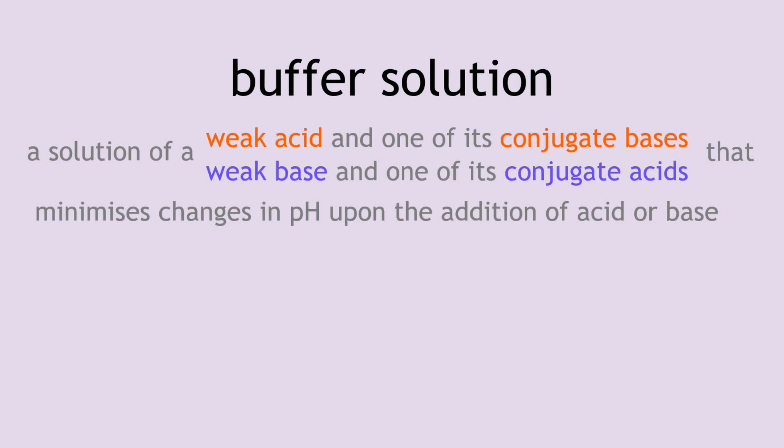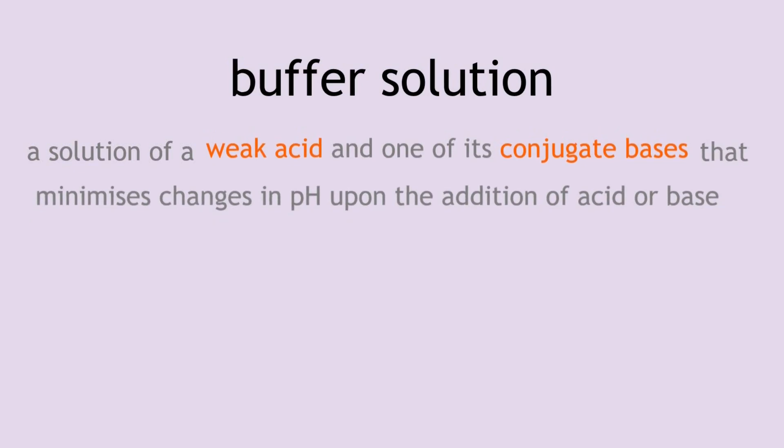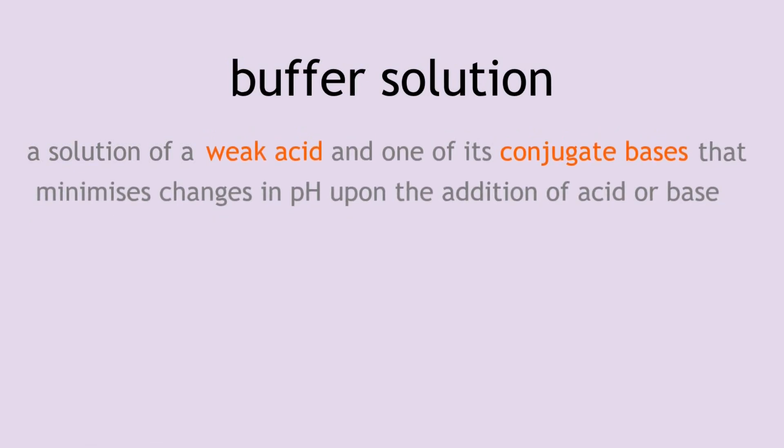There are two types of buffer solutions: one that has a weak acid and its conjugate base, and the other has a weak base and its conjugate acid. The principle for both types of buffers is very similar, so in this video we'll only be looking at acidic buffers — but do remember that all of this mostly applies to basic buffers as well. An acidic buffer solution is one of a weak acid and one of its conjugate bases that minimizes changes in pH upon the addition of acid or base.